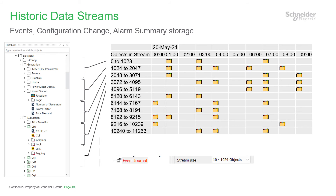To query all database items for an hour, hundreds of files might need to be searched, and to query one database item for a month, large hourly files may need to be searched. So the decision you take here is always going to be a compromise for each history type, but a larger stream size than the default is typically needed. Although the stream size can be changed, doing so after the system has been running live can cause exceptional delays and loss of service, so you really must set this up before going live.